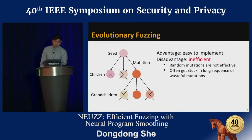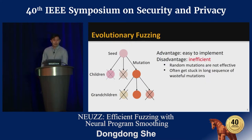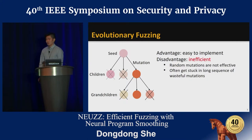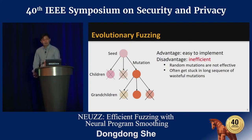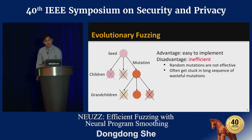Evolutionary fuzzing starts with an initial seed, then through random mutation it generates multiple child seeds, then selects the one with the most promising result as the initial seed for the next round. Evolutionary techniques are easy to implement and have shown significant promise, but they are not very efficient, since the random mutation wastes a lot of mutations without valid guidance and tends to get stuck after a while.